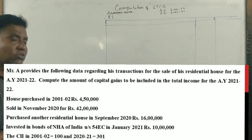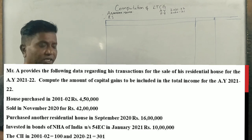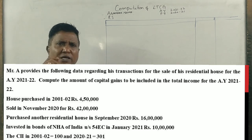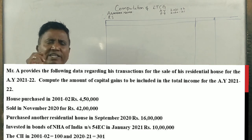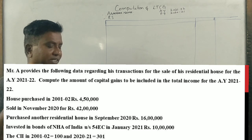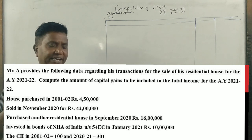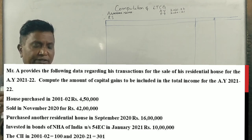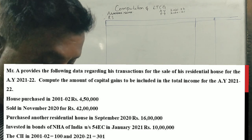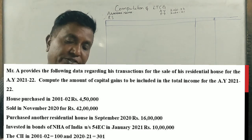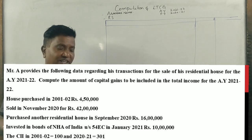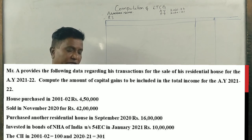Students, I have a 6 marks question. Mr. A provides the following data regarding his transactions for the sale of his residential house for the assessment year 2021-22. Compute capital gain to be included in the total income for the assessment year 2021-22.